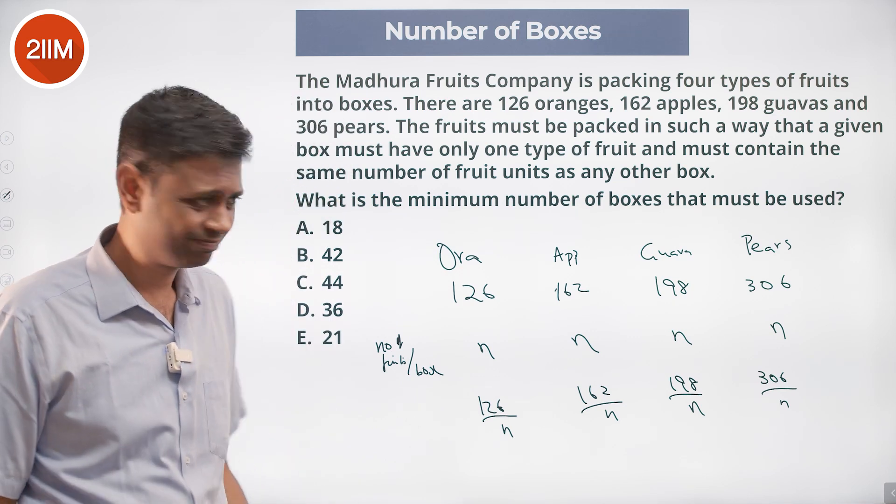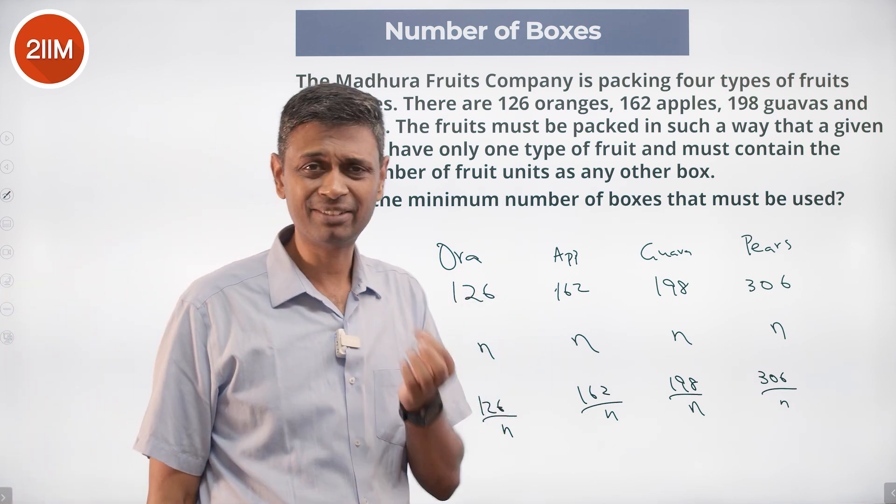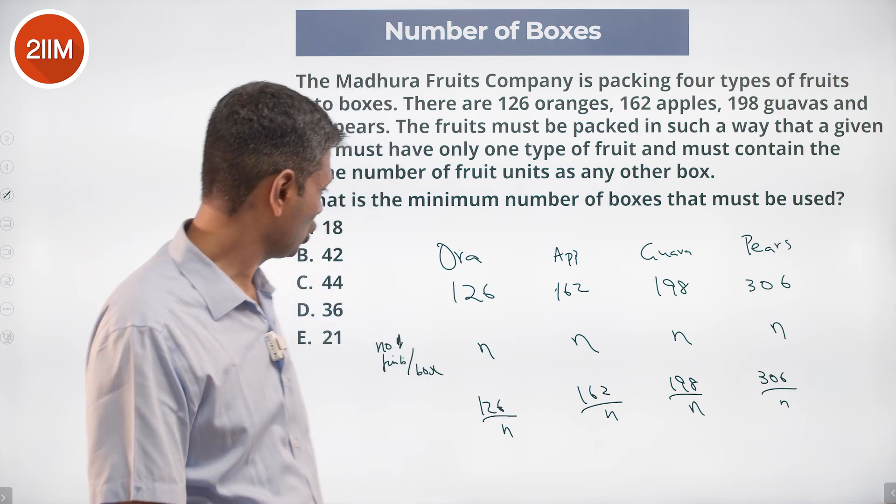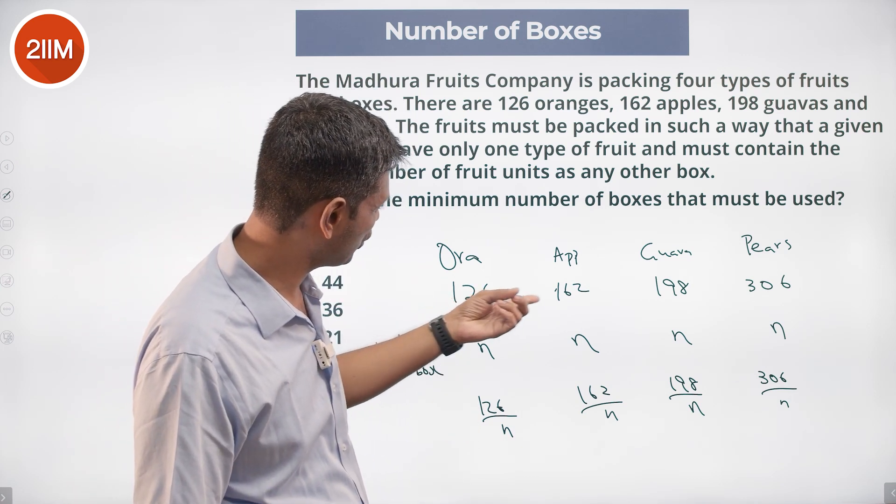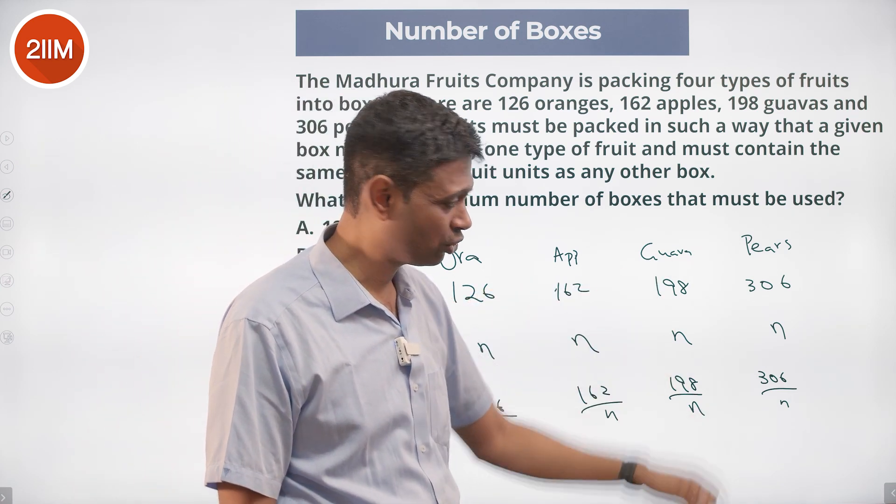N can be 2 - all of these numbers are even numbers, so N is a factor of each of these numbers: 126, 162, 198, 306.